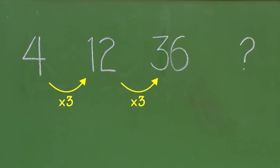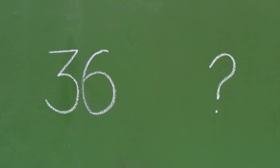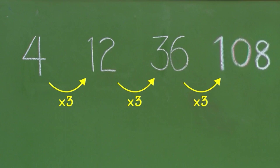Kaya ang 36 imumultiply natin sa 3. 36 times 3 is 108. Ito ang missing term.